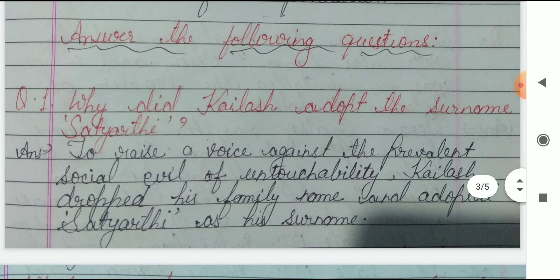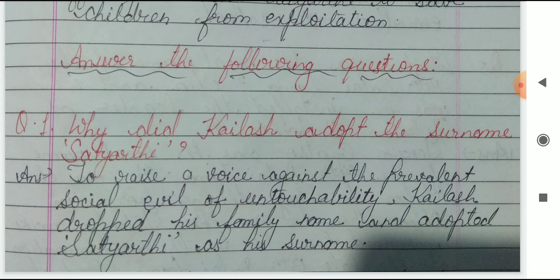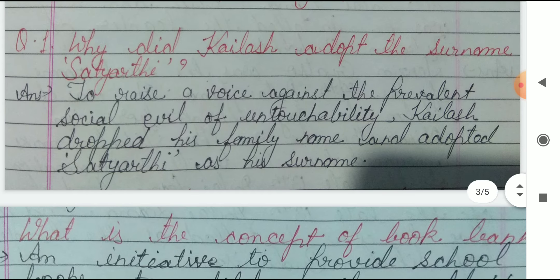You can see there are some more questions in your book. The first longer question is: why did Kailash adopt the surname Satyarthi? To raise a voice against the prevalent social evil of untouchability, Kailash dropped his family name and adopted Satyarthi as his surname — समाज में व्याप्त untouchability और दूसरे बुरे customs को खत्म करने के लिए उन्होंने अपना surname Satyarthi adopt कर लिया।